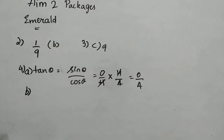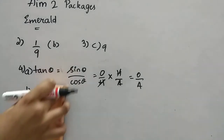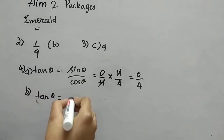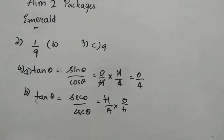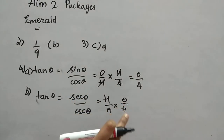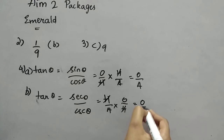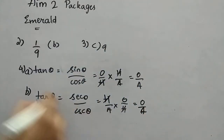Option B says tan θ = sec θ / cosec θ. Writing formulas: sec θ = H/A and cosec θ = H/O. Dividing, H cancels and we again get O/A, which is tan θ. So option B is also correct.